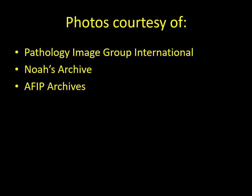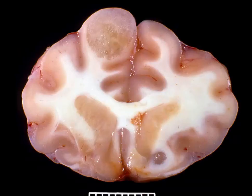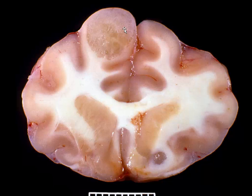Question number one. This is tissue from a cat. I would like a morphologic diagnosis and a cause. This is a cat with multiple gelatinous nodules within the cerebrum affecting both the gray and the white matter. The morphologic diagnosis would be multifocal granulomatous or pyogranulomatous encephalitis, and the cause is Cryptococcus neoformans.